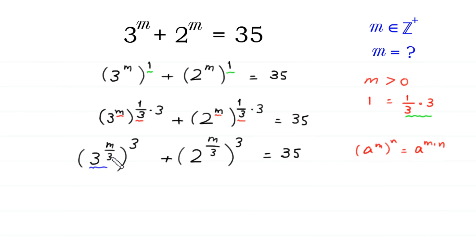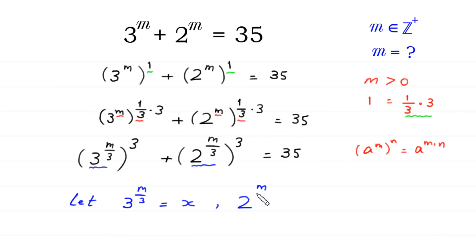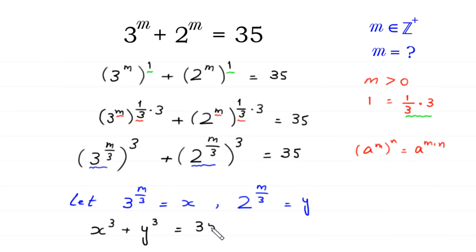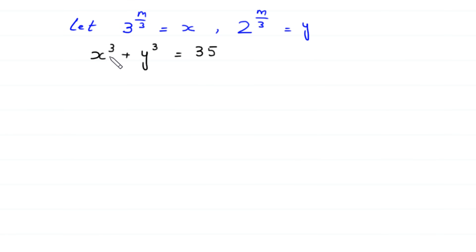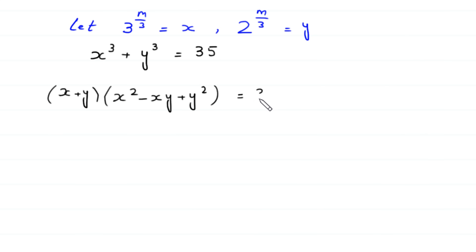Now we suppose that 3^(m/3) = x and 2^(m/3) = y. Substituting x and y, the equation becomes x³ + y³ = 35. According to the algebraic identity, x³ + y³ = (x + y)(x² - xy + y²) = 35.